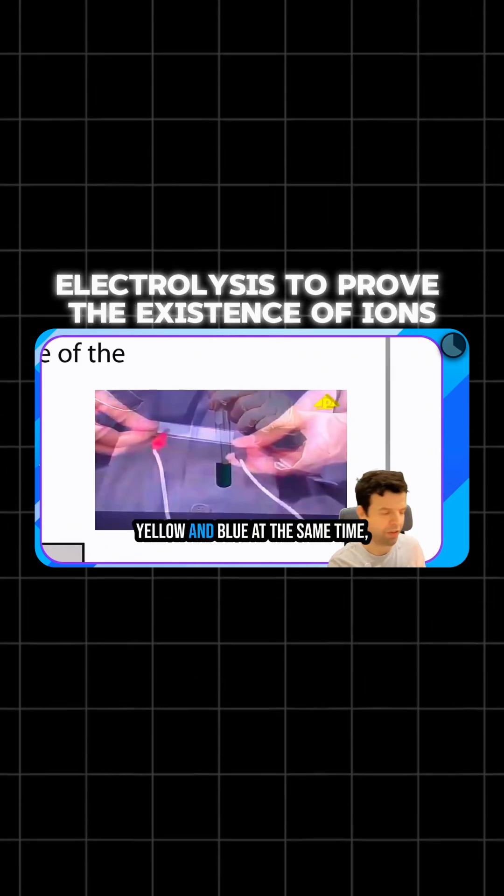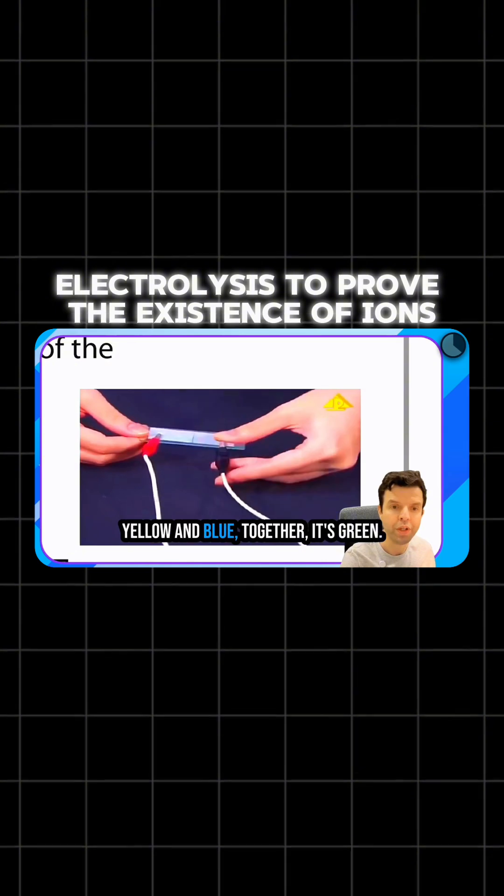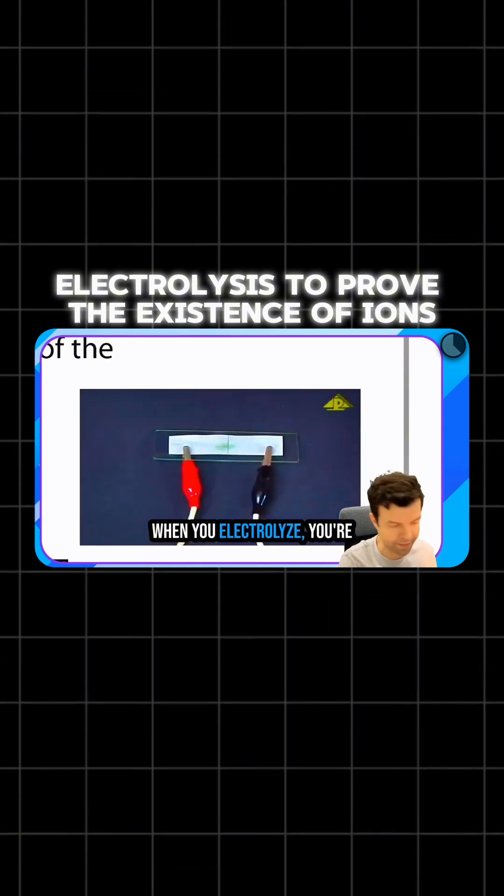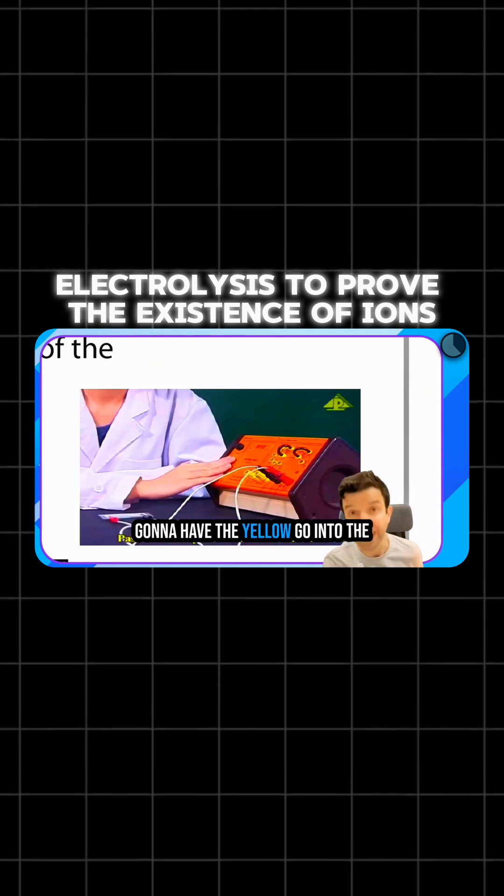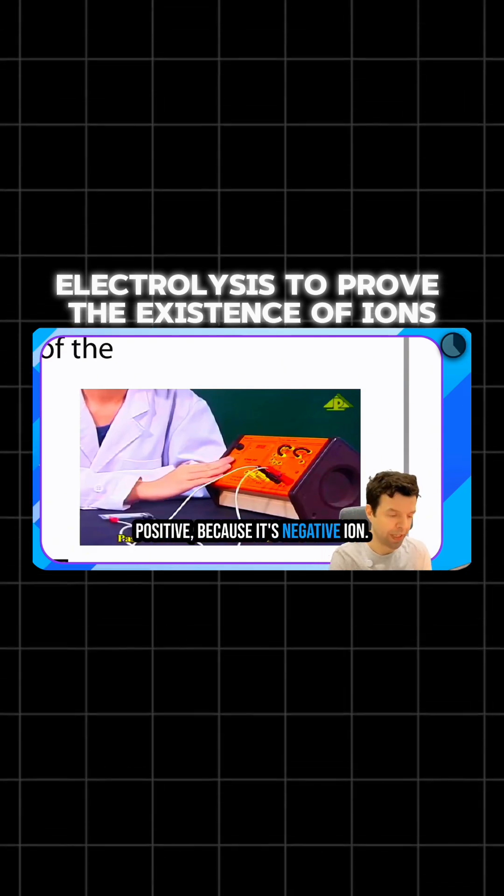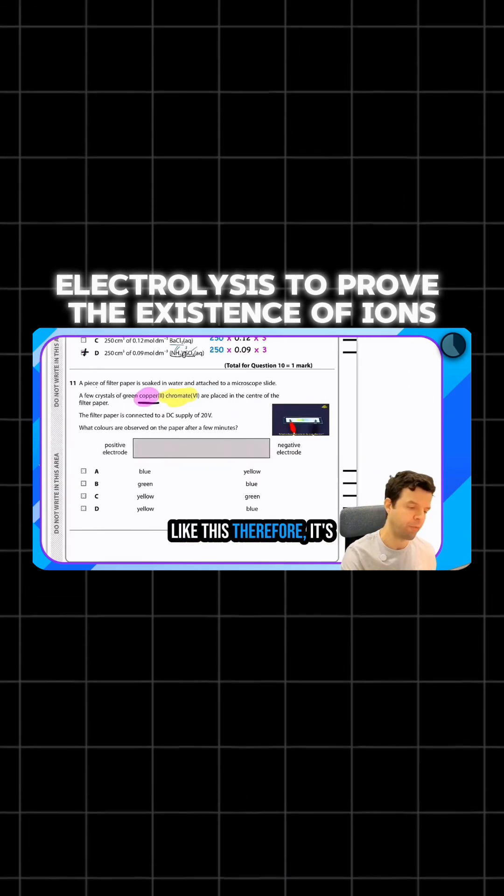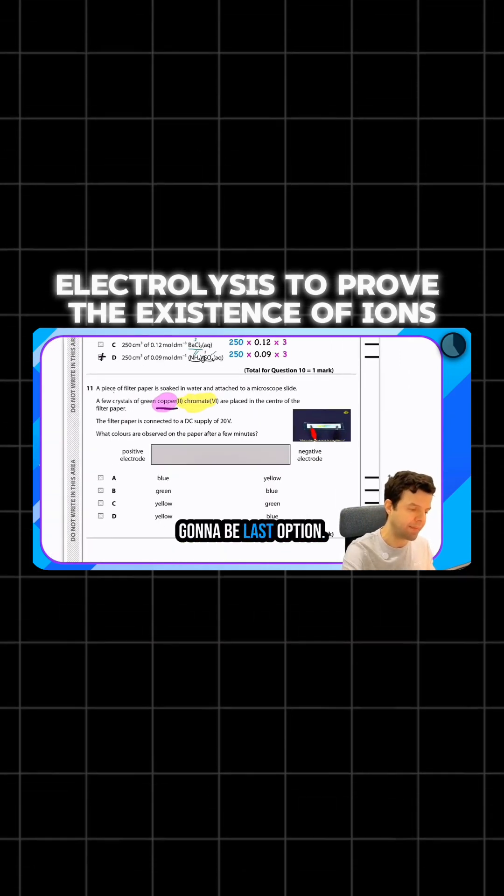What color do you get if you have yellow and blue at the same time? Yellow and blue together is green. When you electrolyze, you're going to have the yellow go into the positive because it's a negative ion, and you have the copper which is a metal go into the negative. Therefore, it's going to be the last option.